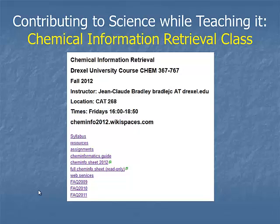Let me step into the teaching arena. I teach a course called Chemical Information Retrieval, teaching students how to find chemical information. Those three links at the bottom are FAQs from three years, about 30 questions each, covering anything relating to chemical information — like what's the ACS's policy on green open access.